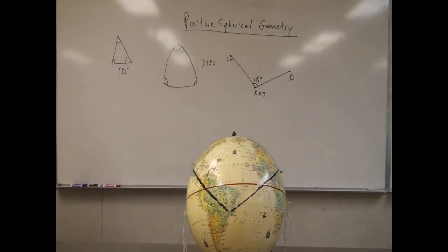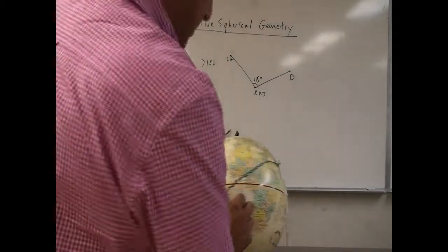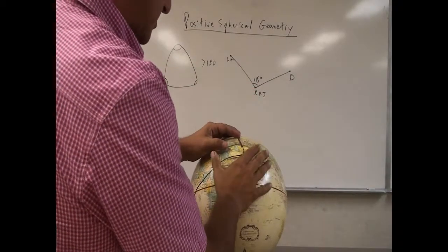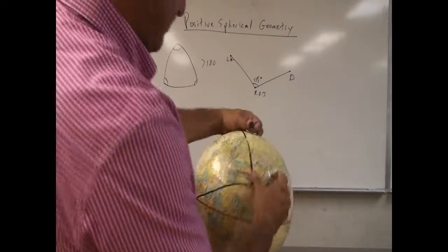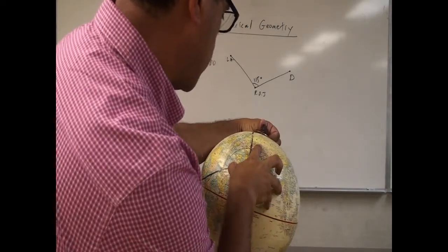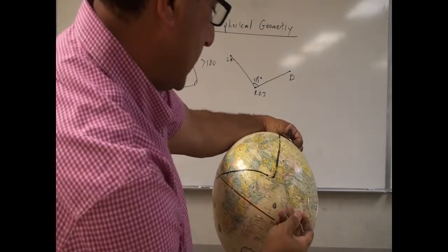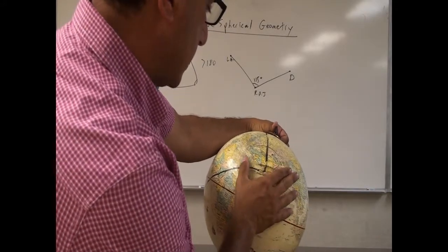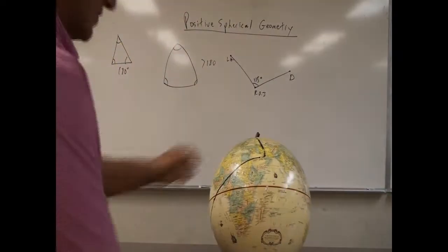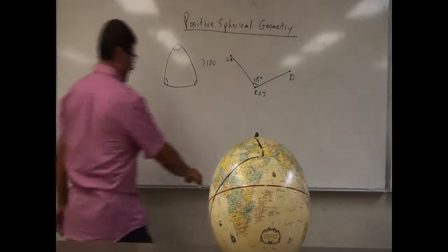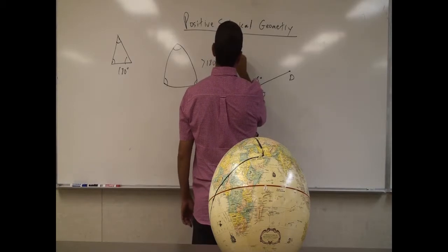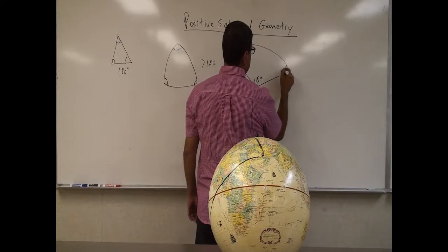Then I'm going to measure the next angle. I take the pin out and put my vertex at the next corner to measure this angle. This angle looks like it's closer to 90 — about 95 degrees, slightly larger than 90.